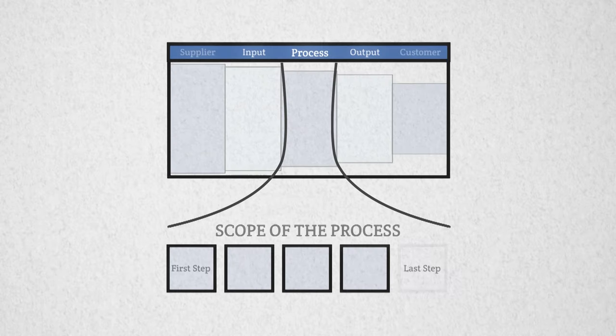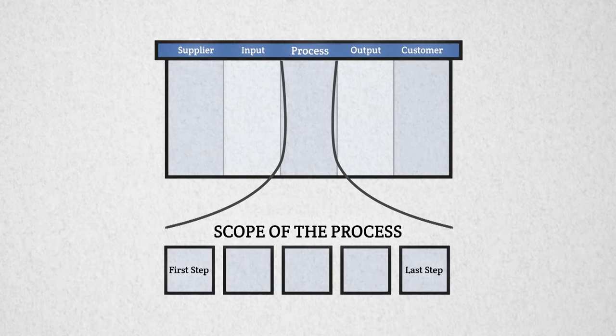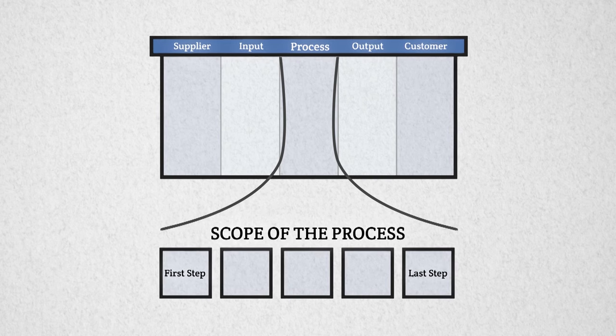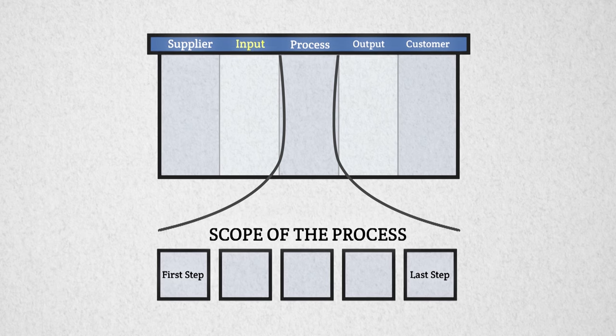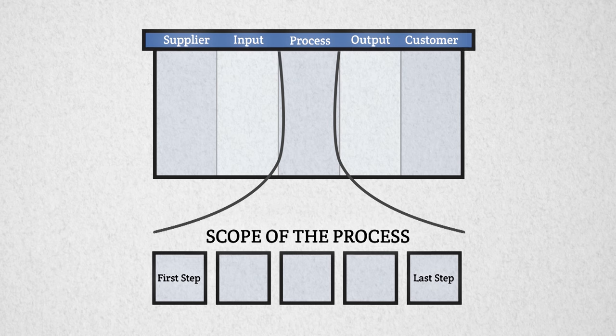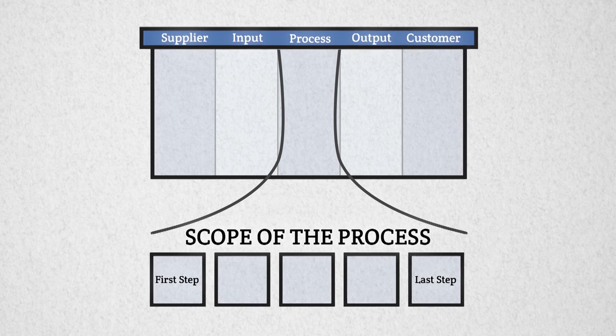Often process mapping begins with a SIPOC diagram which illustrates the macro level big picture and identifies the suppliers, inputs, outputs, and customers of the process and importantly the scope of the process.